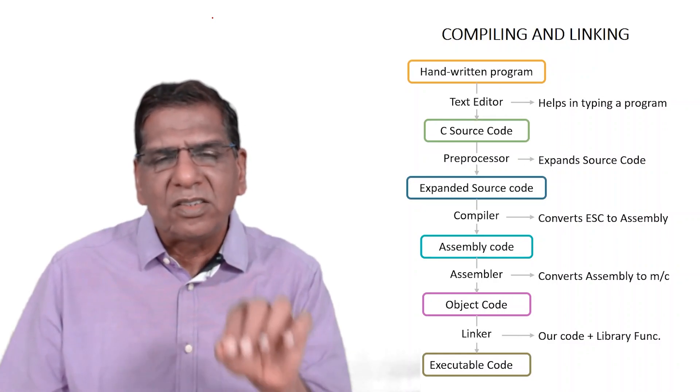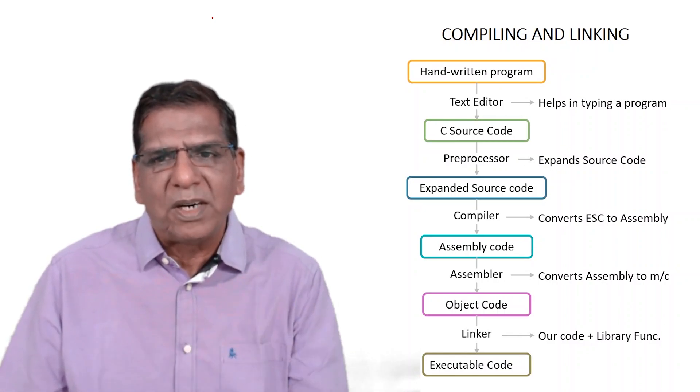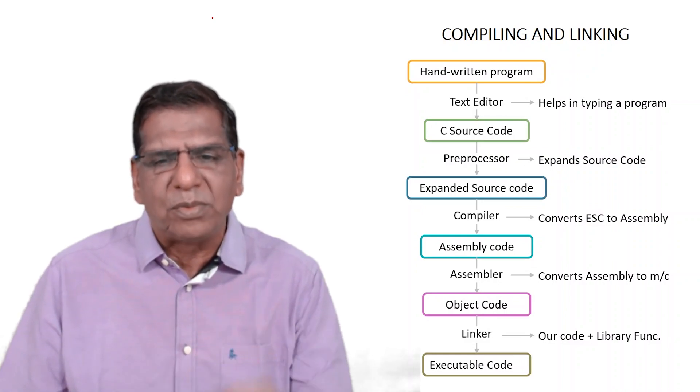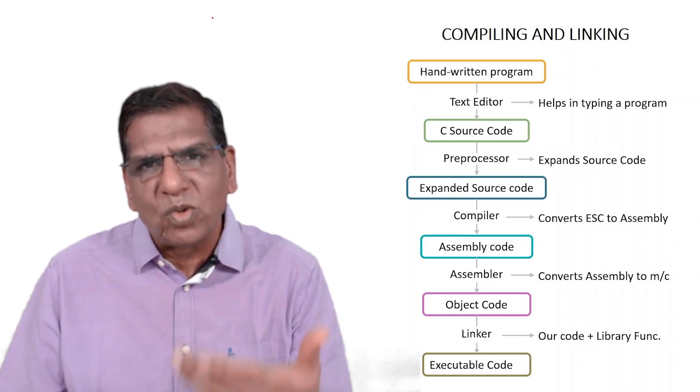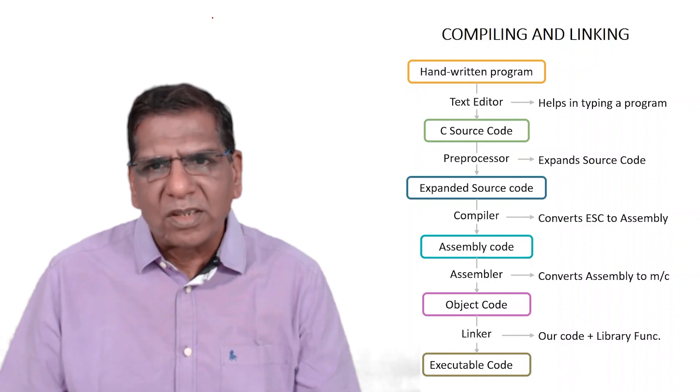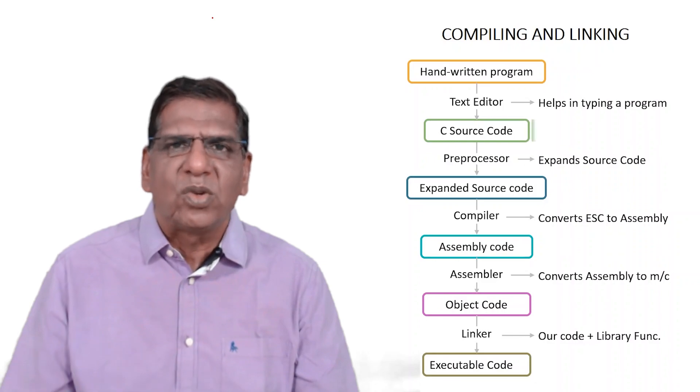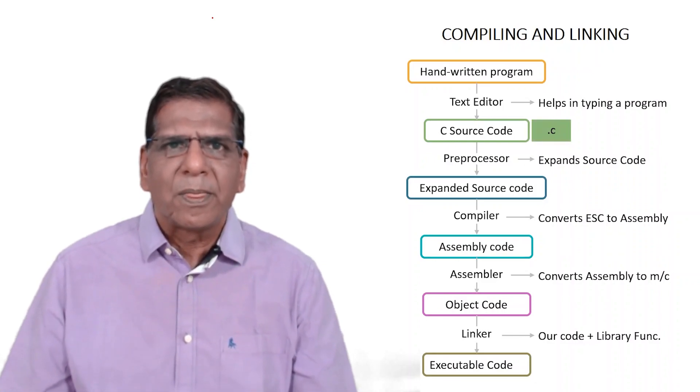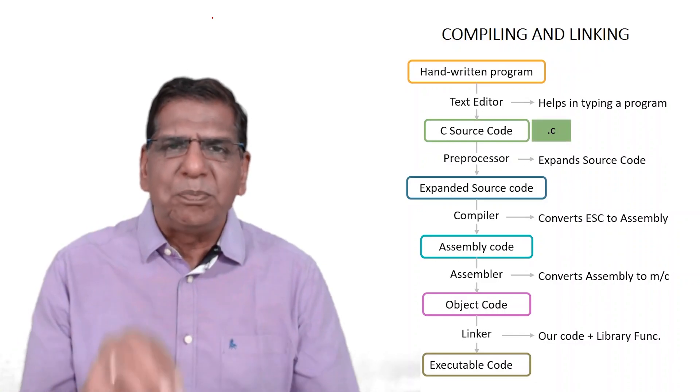When I say that C source code is created, or expanded source code, or assembly code, or object code, or executable code, these codes are files present on your disk. For example, C source code you usually store in a .c file. Maybe your file name is PR1.c.